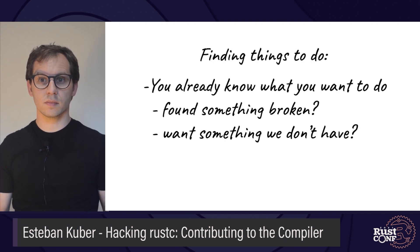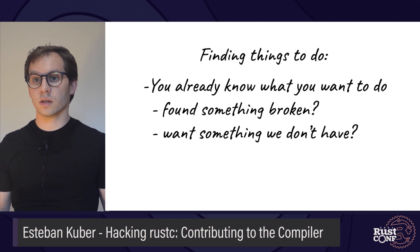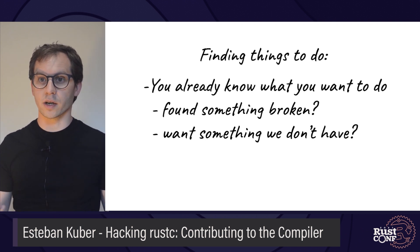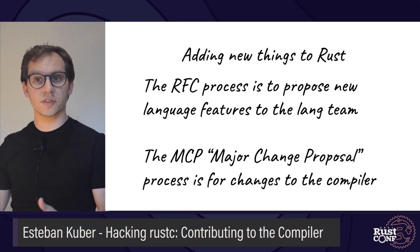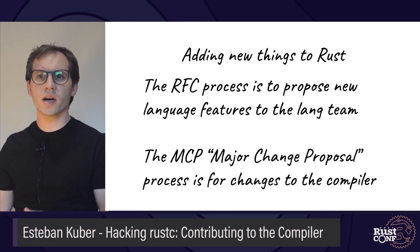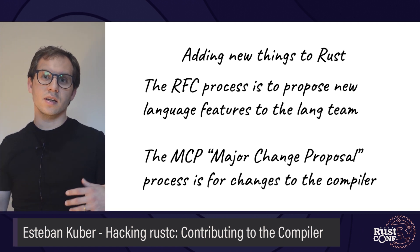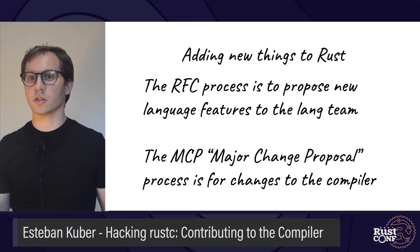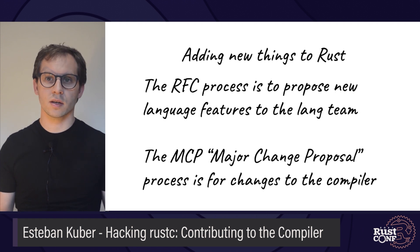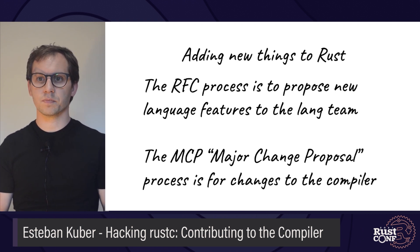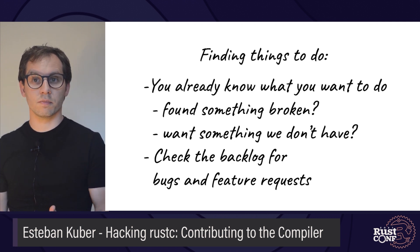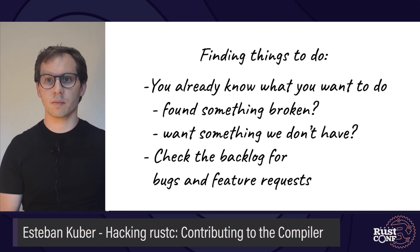Finding something to do can be easy. You may already know something you want changed because you encountered a bug, like an internal compiler error or bad behavior, or there is a feature you want in the language. For new features, there is an RFC and major change proposal process that requires sign-off by the relevant teams — usually the language team for anything that affects the semantics of how Rust works, or the compiler team when it's a change to some implementation detail, specifically if it's user visible. This helps us organize ourselves and avoid people spending too much time implementing a feature when the teams may already have plans in that area. Otherwise, you can check the backlog and look for bugs that have been identified or feature requests, and pick the one you want to tackle.